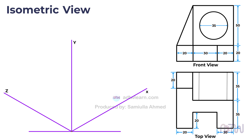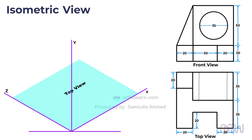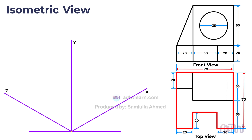We will draw the front view of the object in the x-y plane, as this will make more edges visible. To begin, let's create the top view of the object, which is always positioned on the x-z plane. From the orthographic projections provided, we can determine that the object's total length and width are both 70 millimeters. We'll start by drawing the outline of the top view on the x-z plane.